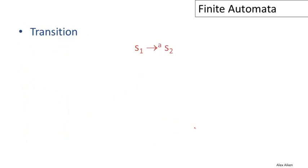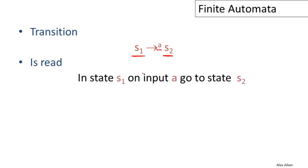Let's look at transitions in a little more detail. A transition in a finite automaton — in this case I've written out one particular transition — means we're in state one and we read the input 'a', then the automaton can move to state two. There could be lots of different transitions from different states and different inputs. It's read as: if we were in state one on input 'a', we go to state two.